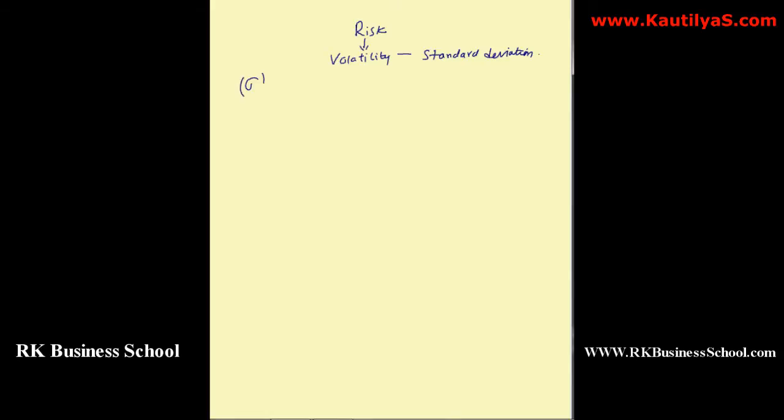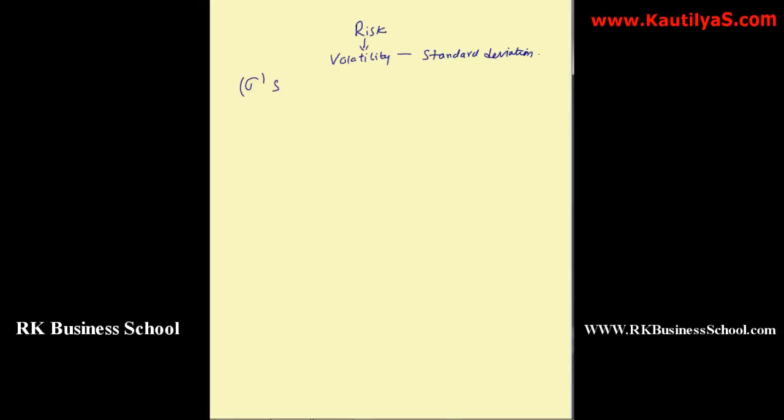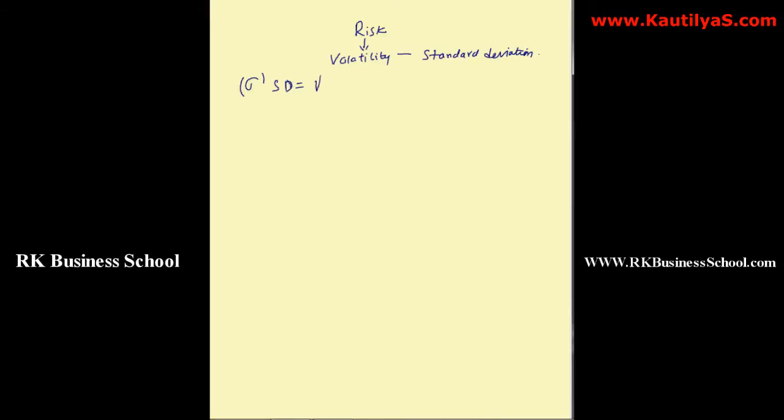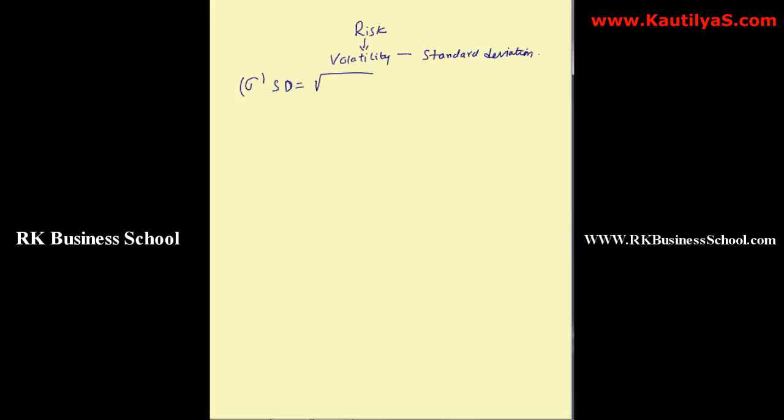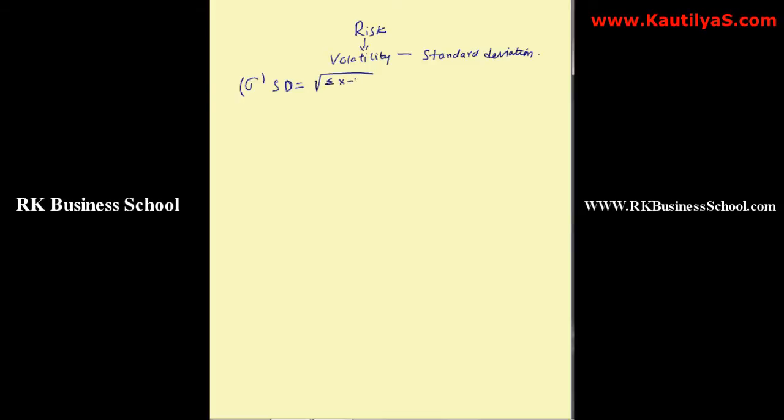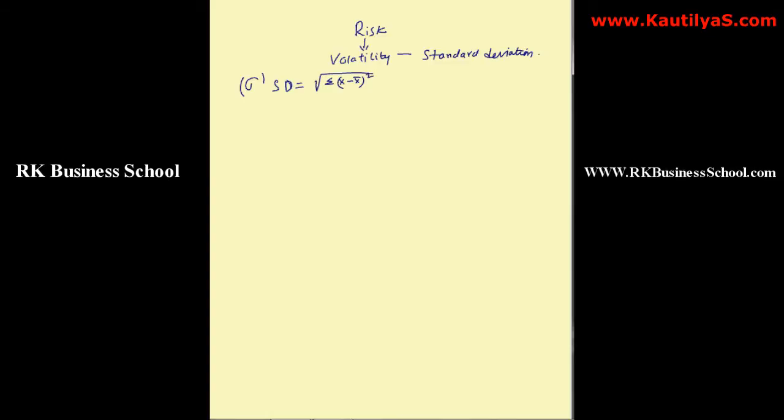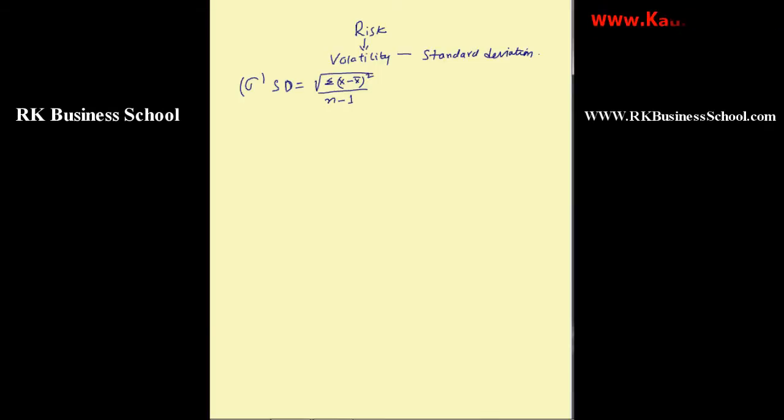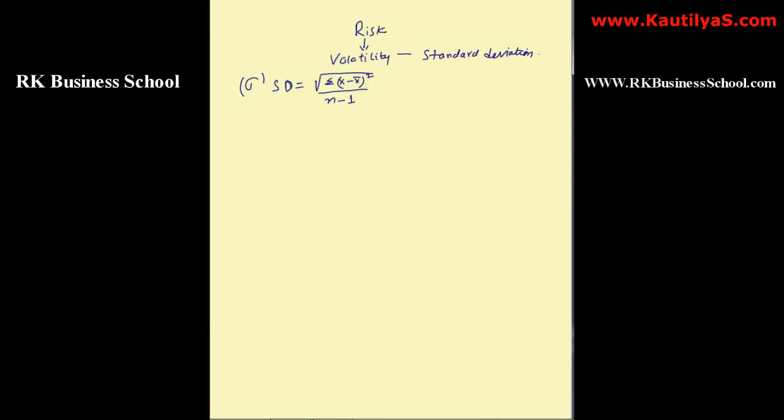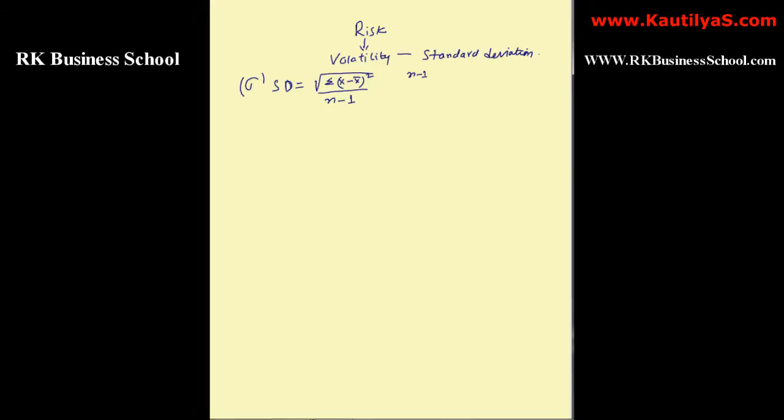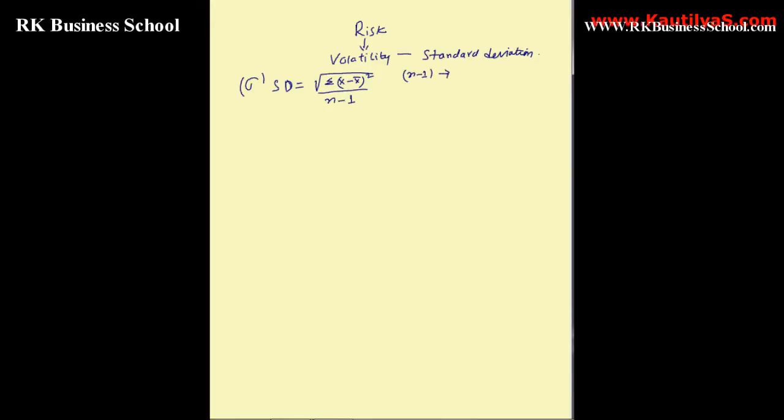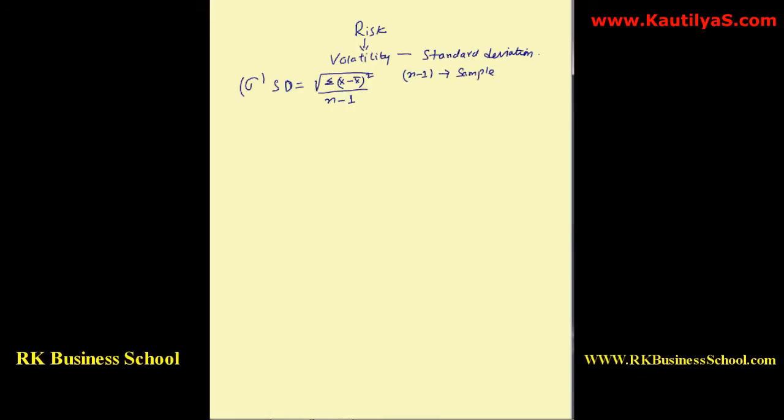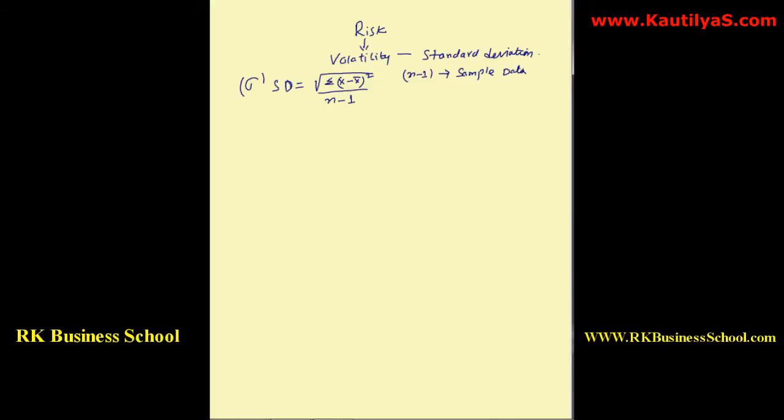To measure the standard deviation, the symbol we use is sigma or SD. This equals to square root of summation of (X minus X bar) whole square divided by (n minus 1). We use n minus 1 in the denominator when your data is from a sample.